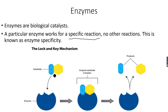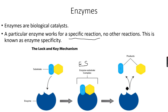Only a specific substrate can fit into the structure of the enzyme. First, the substrate fits into the enzyme and forms an enzyme-substrate complex, also called the ES complex. The enzyme then breaks down the substrate — what was initially one large molecule is broken down into two molecules. The products are then released from the enzyme.